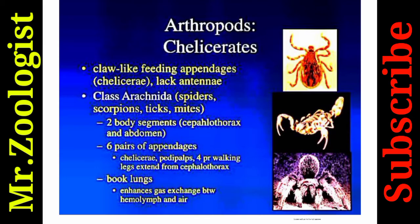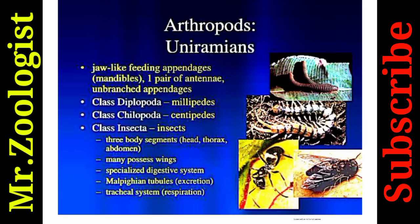Chelicerates have claw-like feeding appendages. Class Arachnida includes spiders, scorpions, ticks, and mites. They have two body segments — cephalothorax and abdomen — and six pairs of appendages including chelicerae, pedipalps, and four pairs of walking legs extending from the cephalothorax. Book lungs are present to enhance gas exchange with hemolymph.